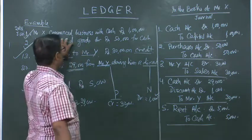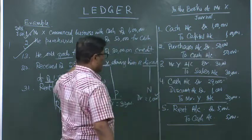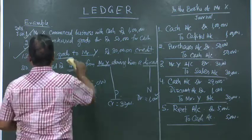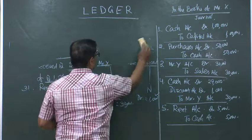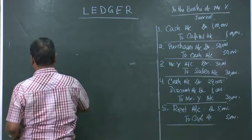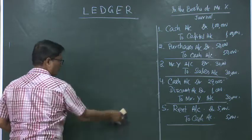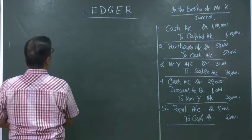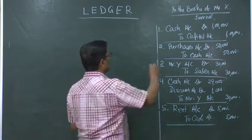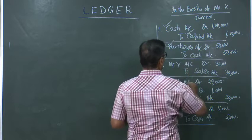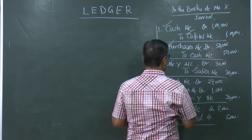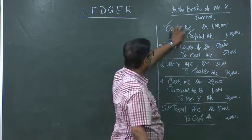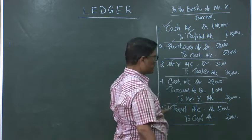On January 31, rent paid rupees 5,000: rent is a nominal account — debit losses and expenses — so rent account debited 5,000. Cash account being a real account — credit what goes out — so cash account credited 5,000. Entry: rent account debited 5,000 to cash account 5,000, being rent paid in cash. We can now open 7 ledger accounts: cash account, capital account, purchases account, Mr. Y account, sales account, discount account, and rent account.